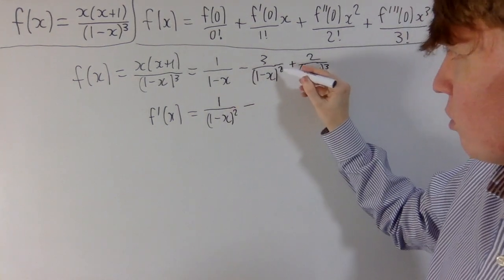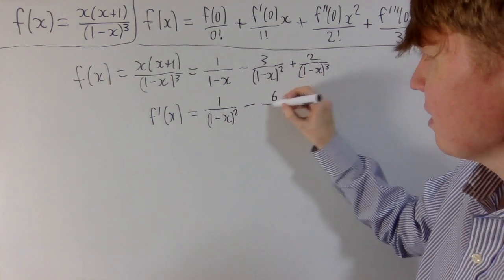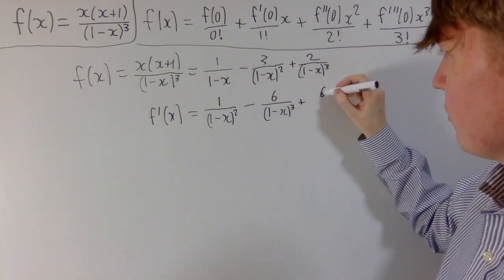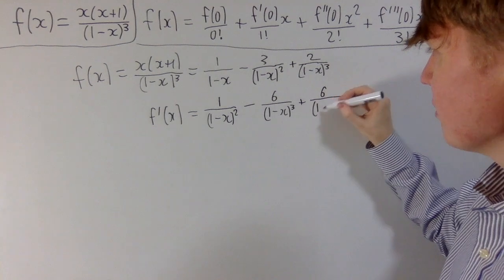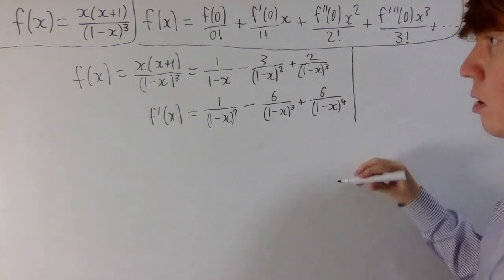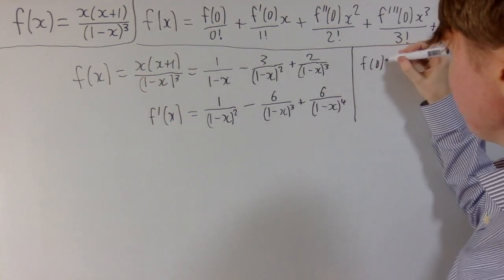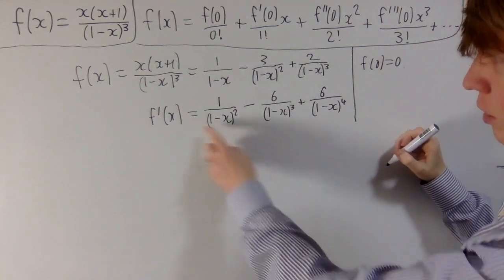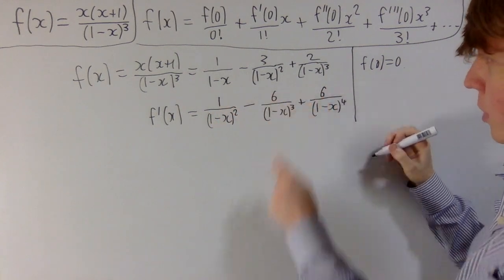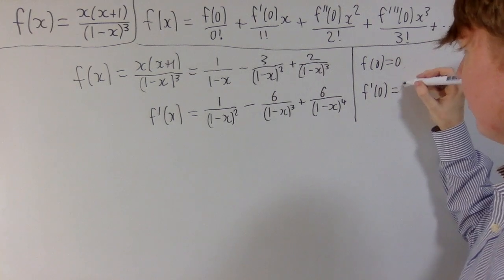For the second term, the same sort of story: you multiply by minus 2 and by minus 1 from the inner function, ending up with minus 6/(1-x)³. And for the third term, 3 times 2 gives you 6, and your negatives cancel once again. This is quite useful because f(0) you can just read off — it's equal to 0. And f'(0): your denominators are all just 1, so it's 1 minus 6 plus 6, which gives you 1. So f'(0) = 1.